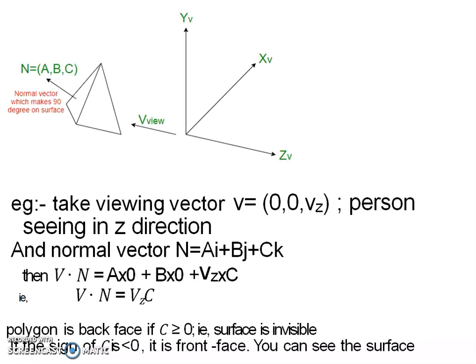Here, in this example, this V represents the viewing vector from the z direction. The customer or user is viewing from the z direction. N is the normal vector, which makes 90 degrees on the surface. The coordinate is A, B, C. The user is viewing in the z direction and cannot see this part. That is, this one is back face.